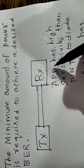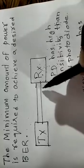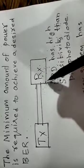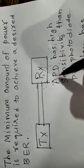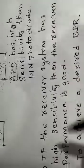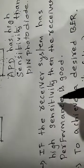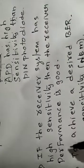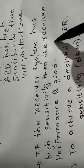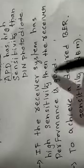Whenever using avalanche photodiode it is capable to detect the smallest signal also. That is the concept about APD. If the receiver system has high sensitivity then the receiver performance is good. So whenever receiver performance is good then to achieve a desired bit error rate...